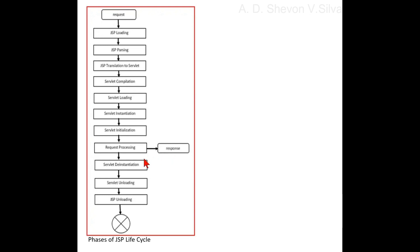Generating dynamic response. After getting the request and response objects, the container will invoke the _jspService() method, execute its content, and then generate a response to the response object.